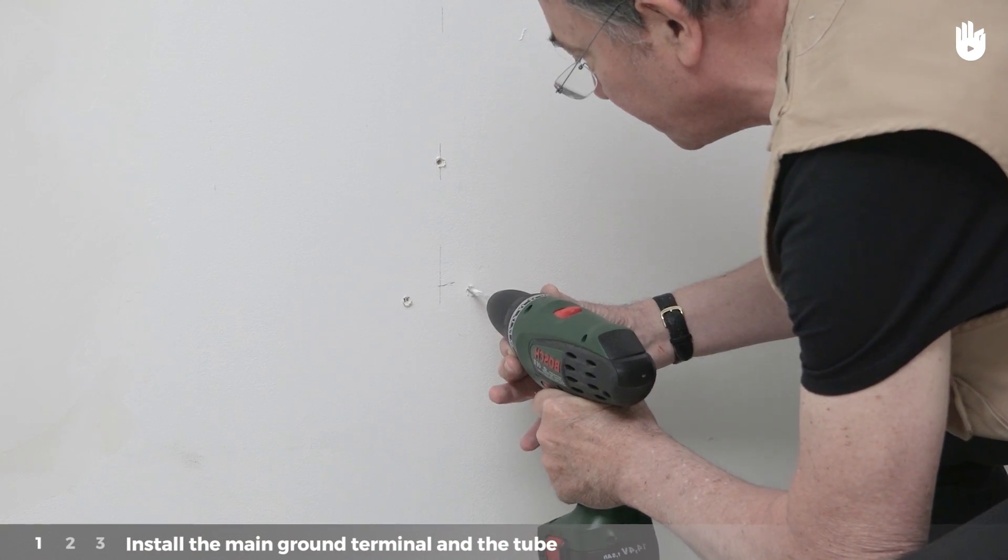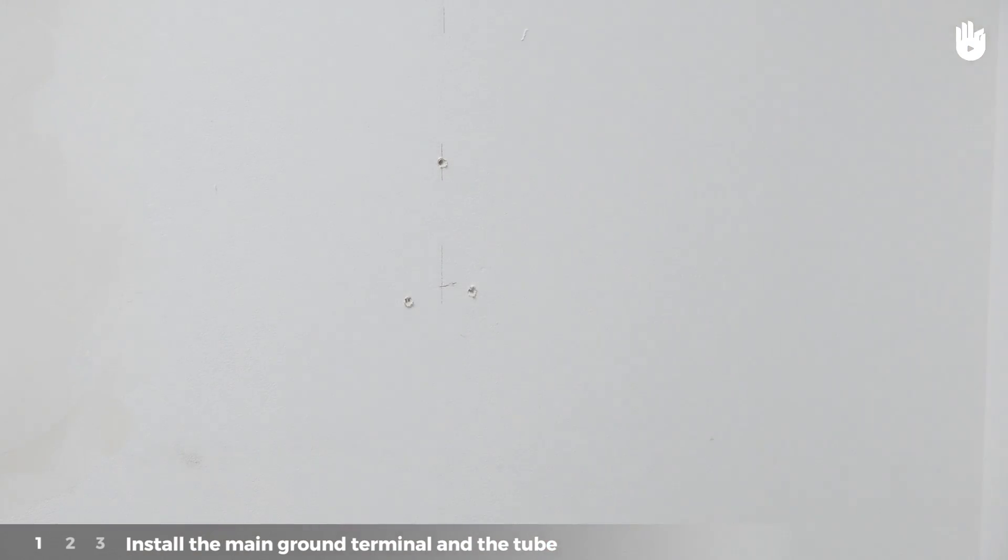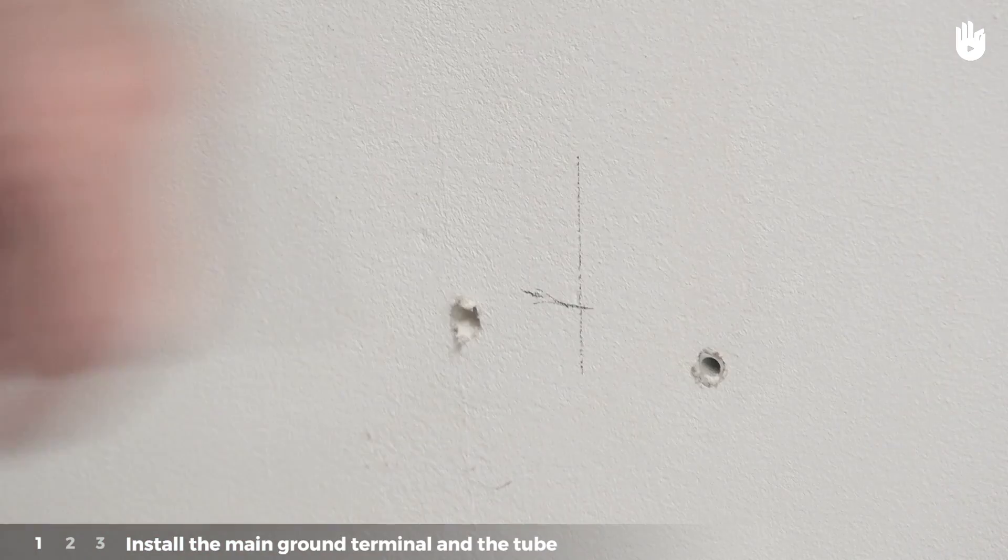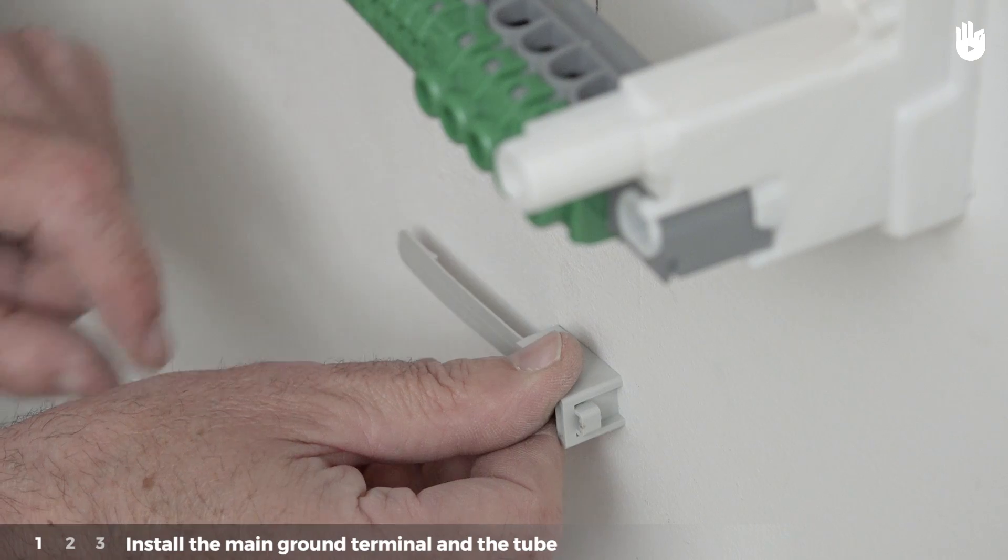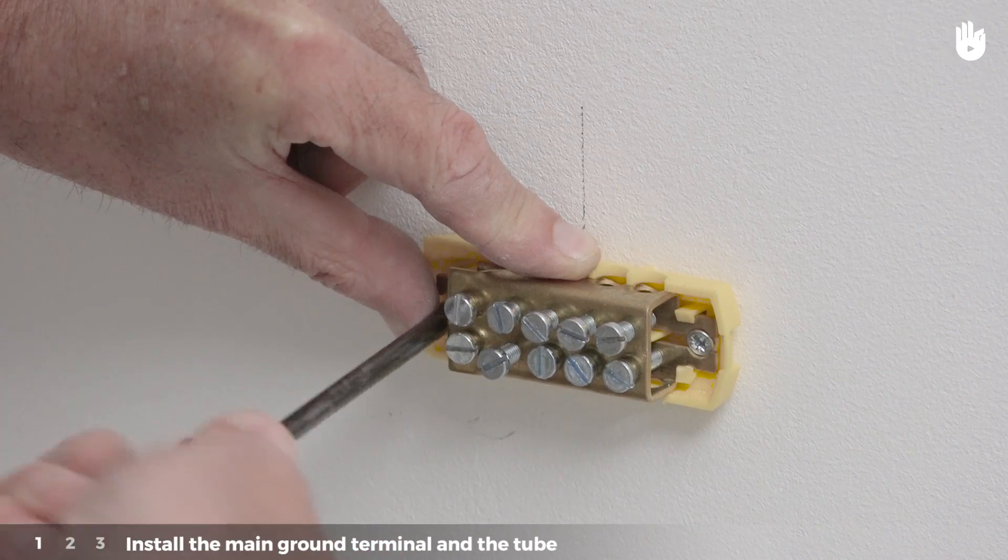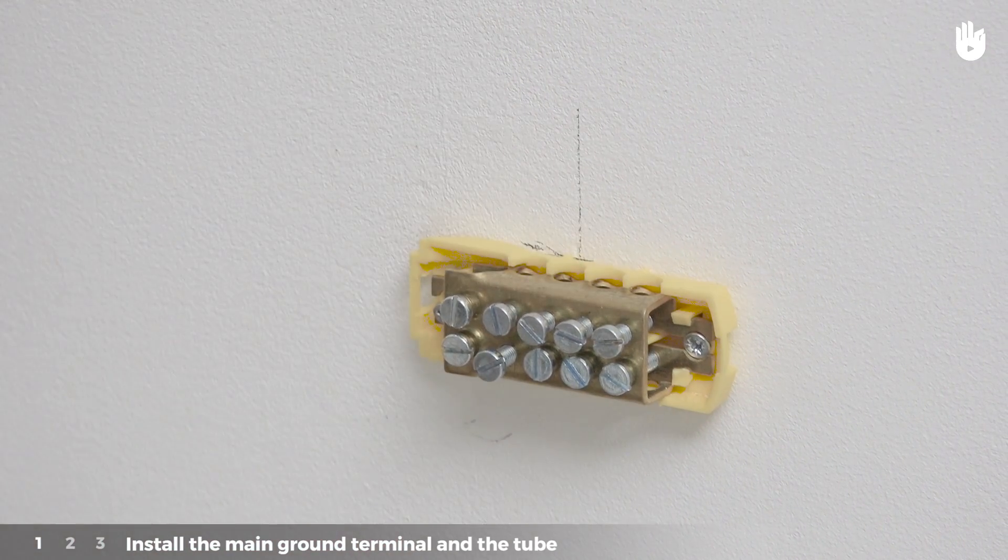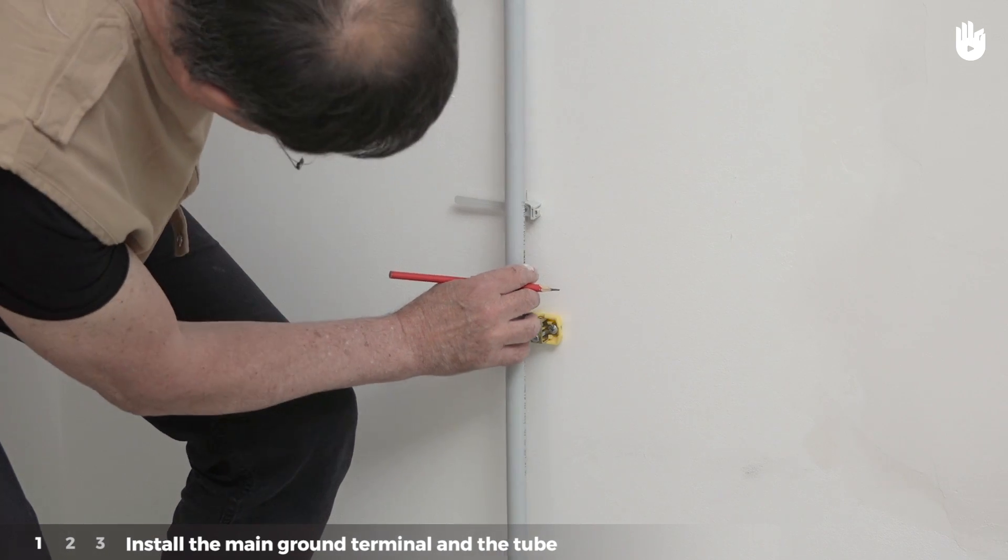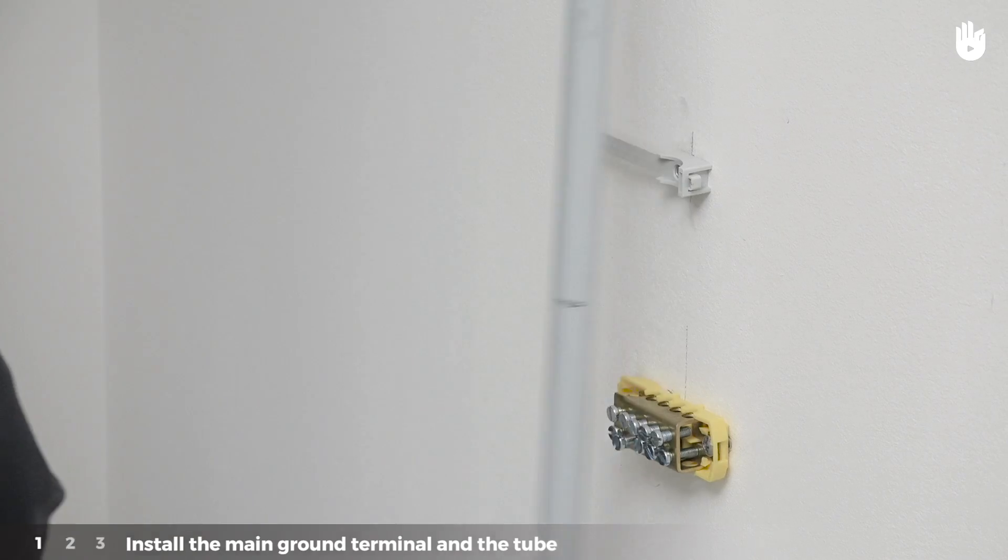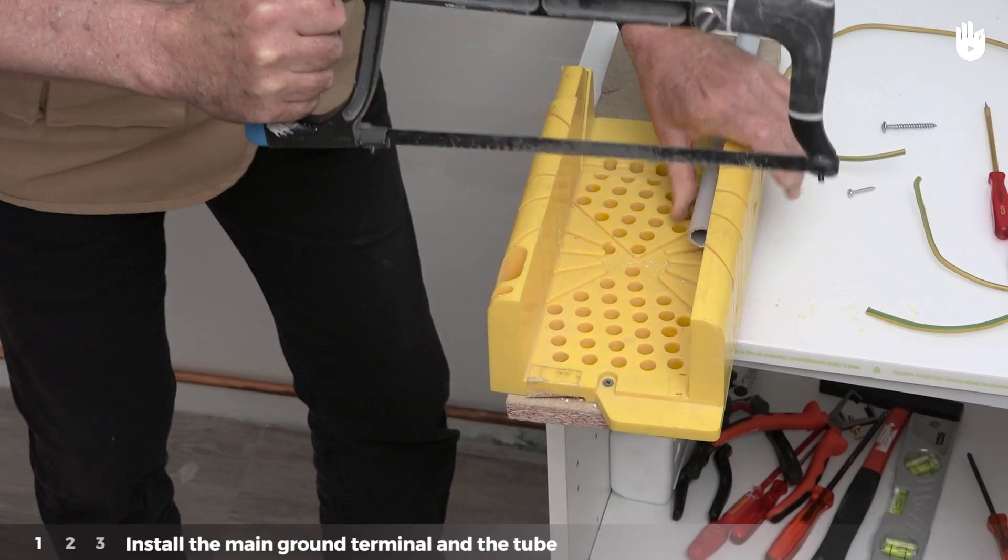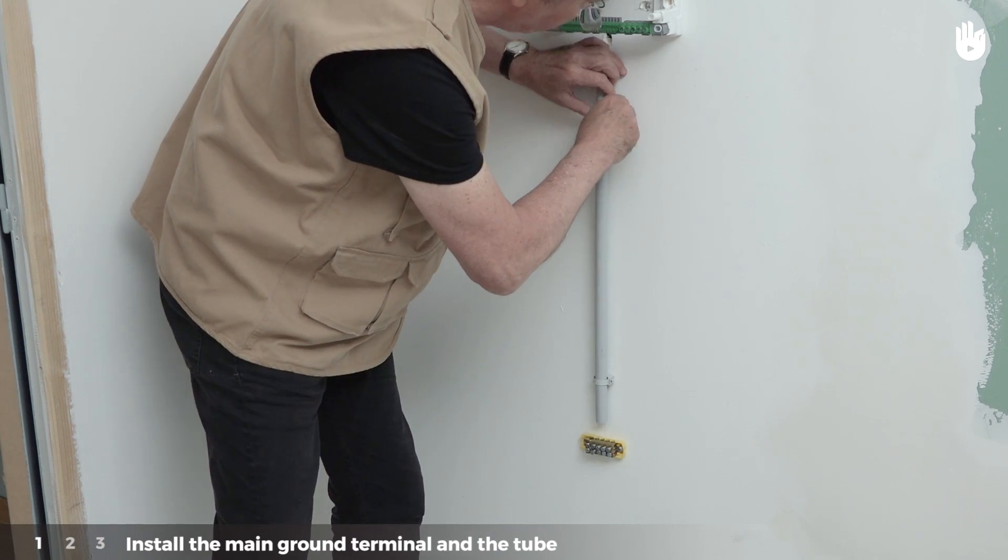Drill four holes. Insert the screw anchors using a hammer if necessary. Screw in the mounting brackets. Attach the main ground terminal to the wall by screwing it in. Measure the rigid tube between the main ground terminal and the electrical panel. Cut the tube to size and then attach it using the mounting brackets.